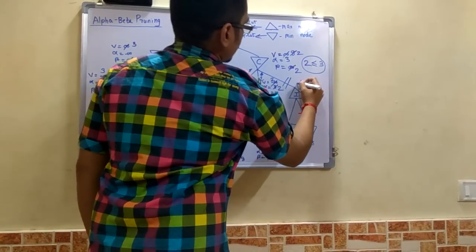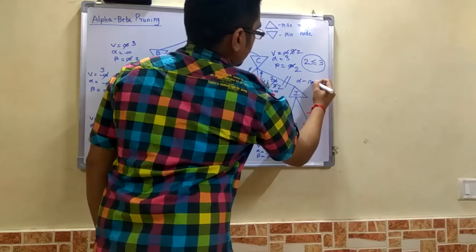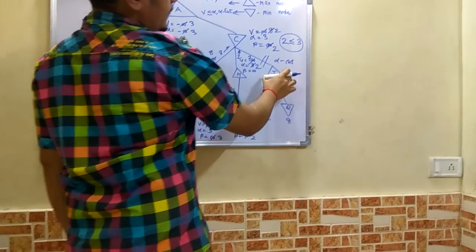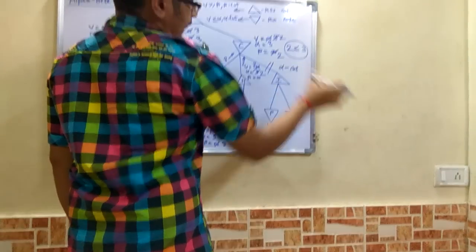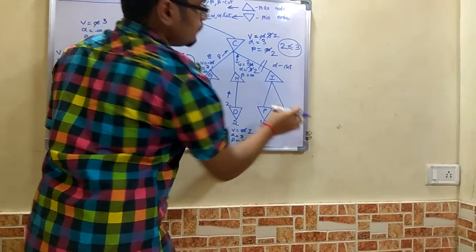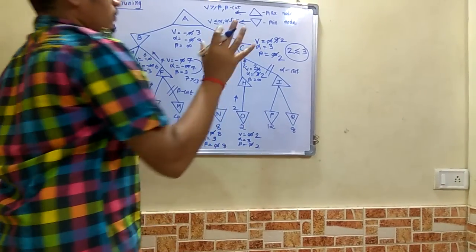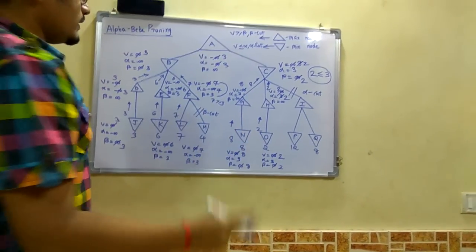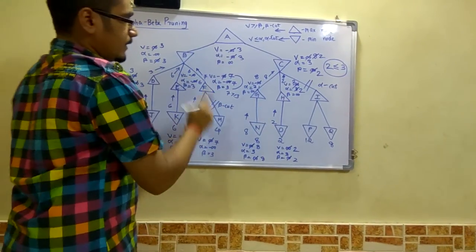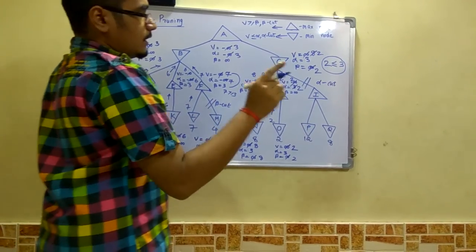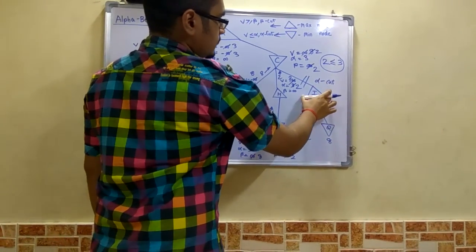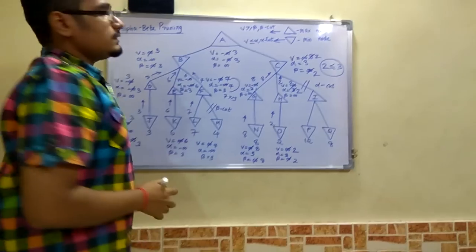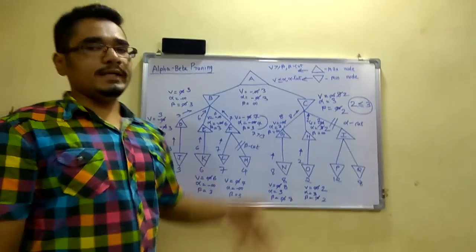We cut this branch, and this cut is called an alpha cut. This alpha cut is performed on node I, and so the nodes P and Q will not be traversed. In this pruning technique we have done two cuts: one alpha cut and one beta cut. The alpha cut is done for the node which has two further sub-nodes. This is the alpha-beta pruning technique in detail.